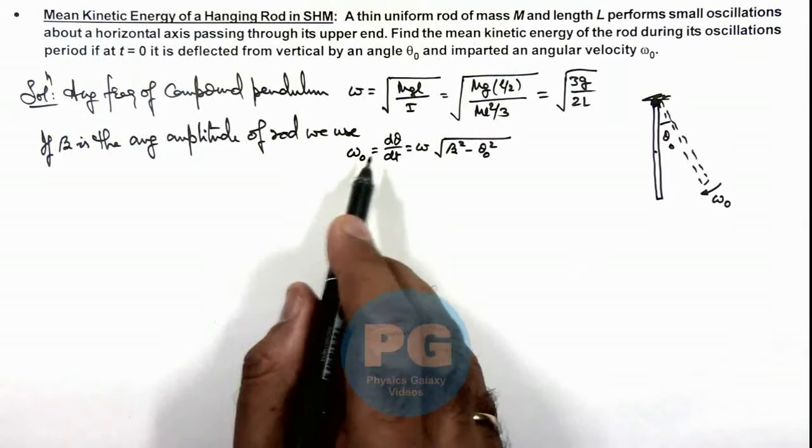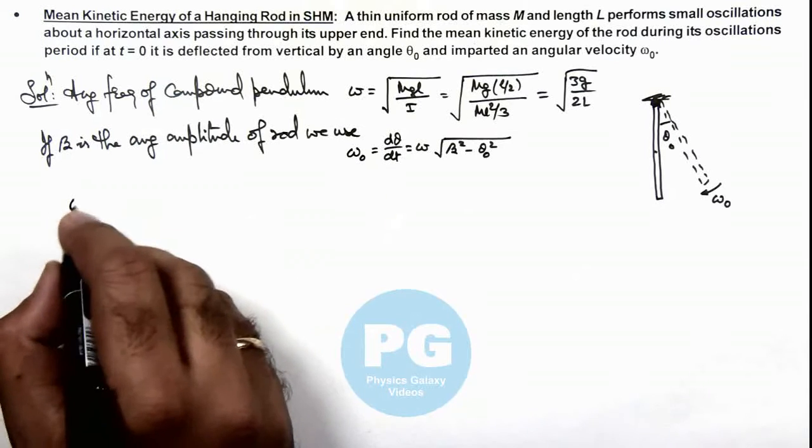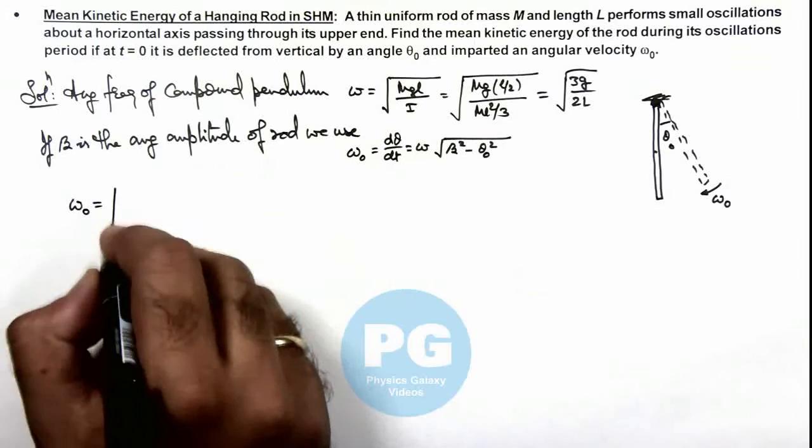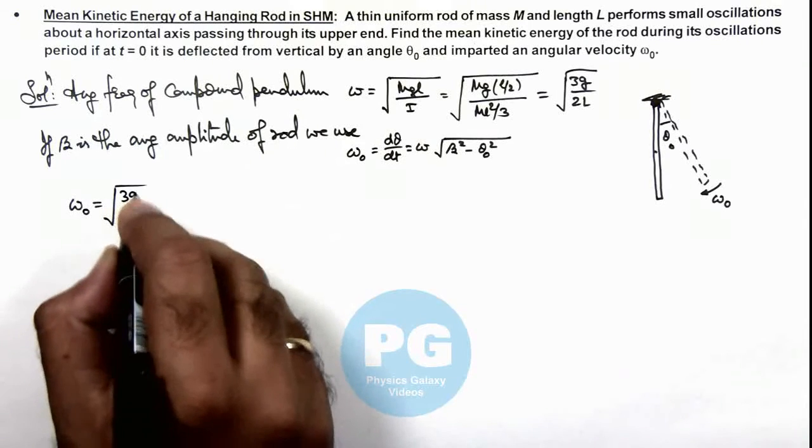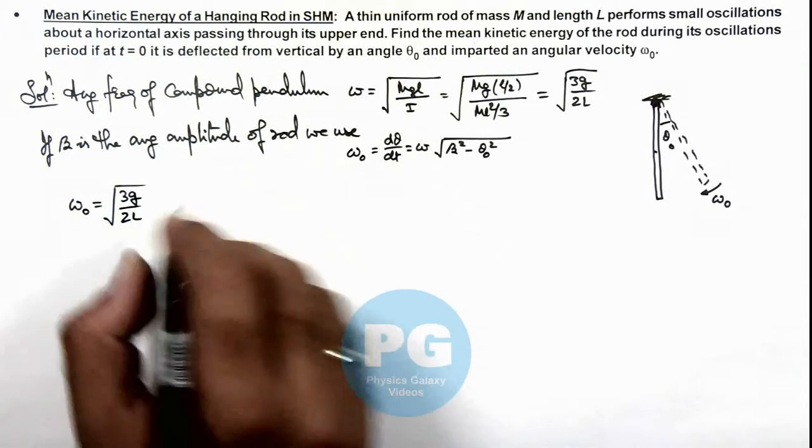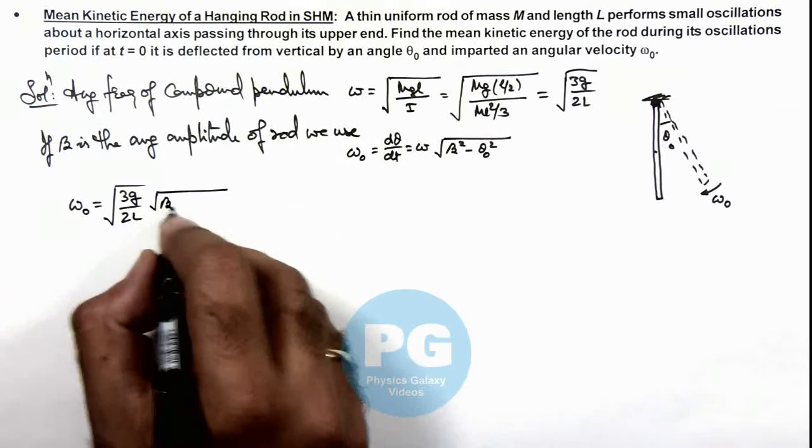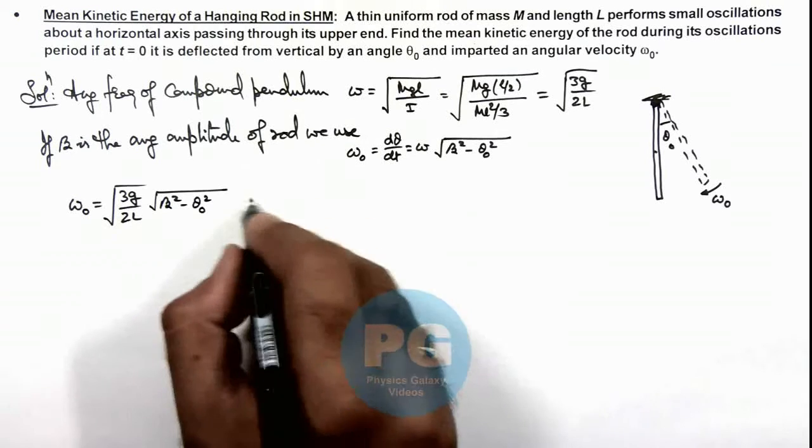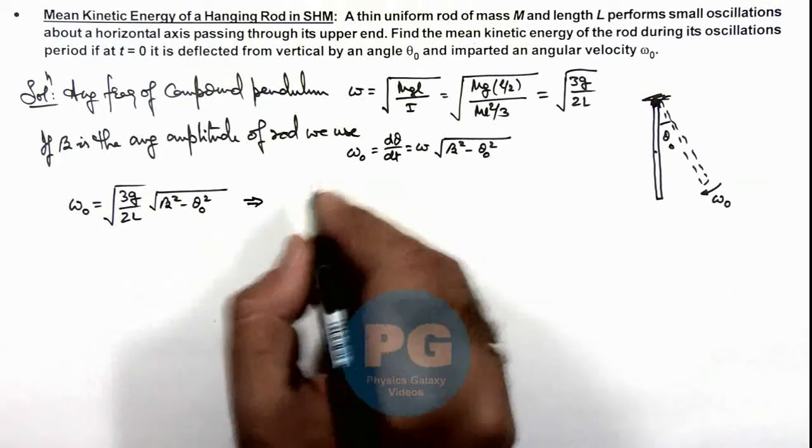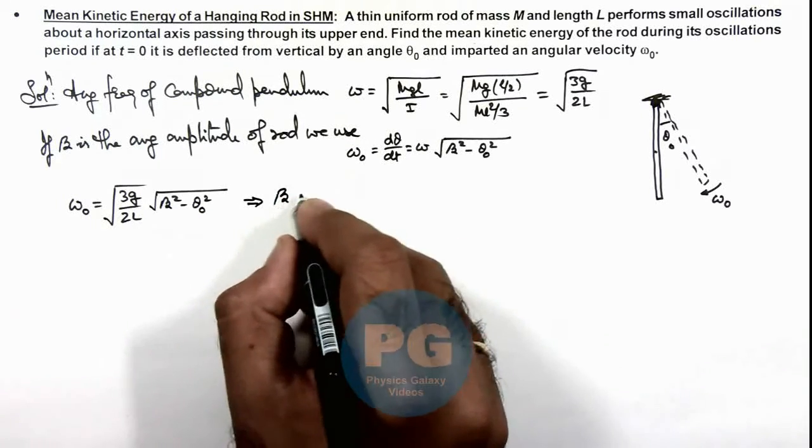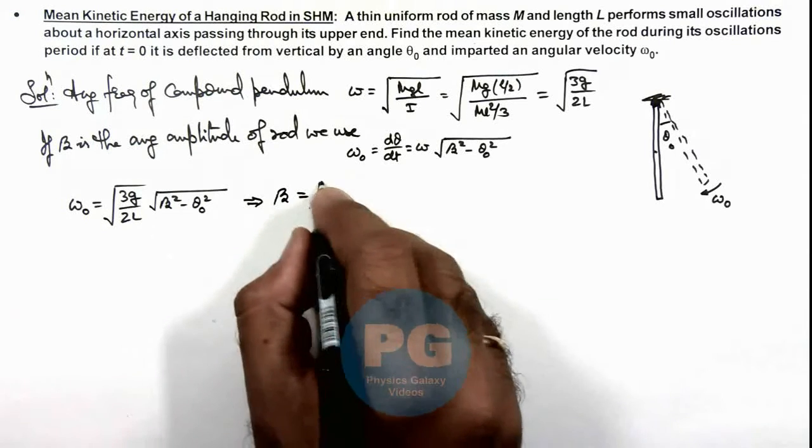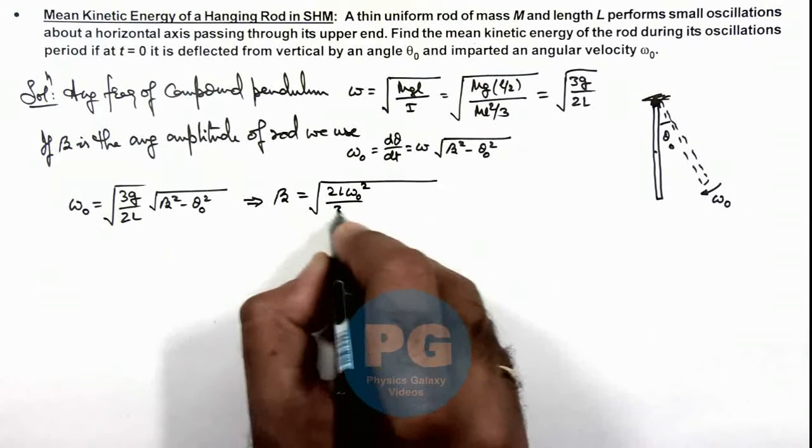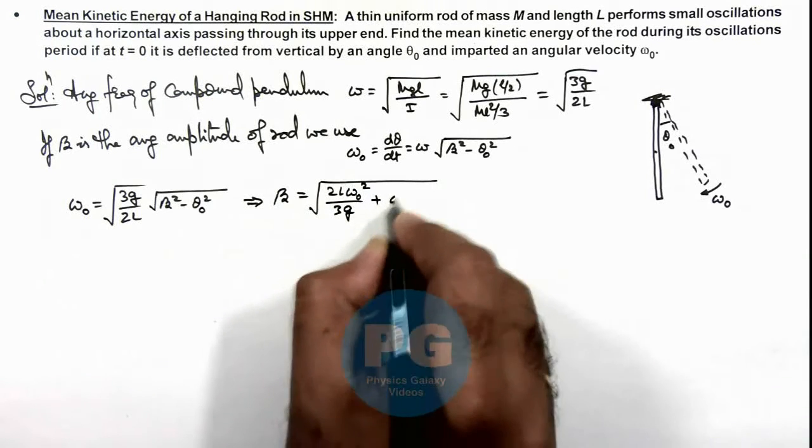So here if we substitute the values, you can see this gives us omega not is equal to the value of omega we already calculated as 3g by 2L, multiplied by root of beta squared minus theta not squared. Further simplifying, squaring this expression will get the value of angular amplitude beta which is equal to root of 2L omega not squared by 3g plus theta not squared.